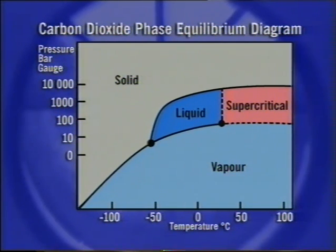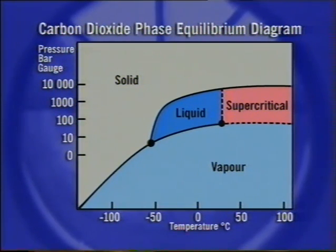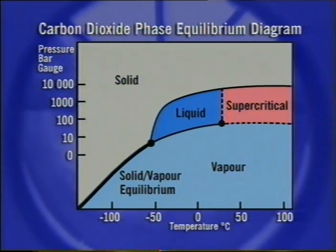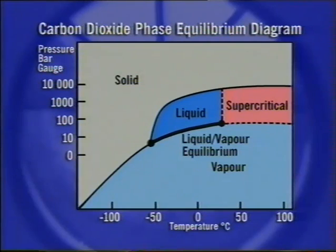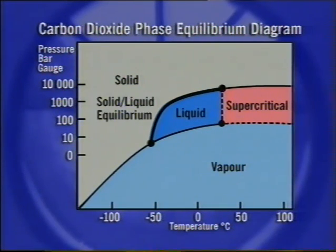The solid lines indicate the pressures and corresponding temperatures under which two different phases can exist in equilibrium — for example, solid and vapor, liquid and vapor, and also solid and liquid.